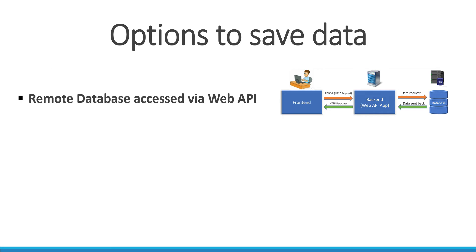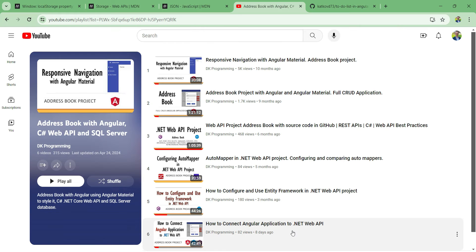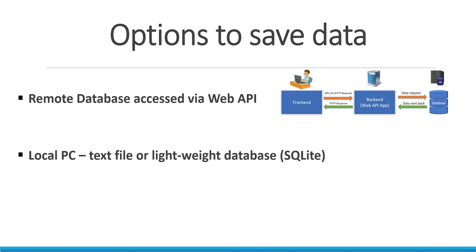This is the most popular option for web applications but also the most complicated one. I'm already working on a series of videos that does exactly that - building our own web API and connecting an Angular application to it. So we're going to choose a different option. Our next option could be to save data locally in a text file or a lightweight database like SQLite, but this is more commonly used for desktop and mobile applications.